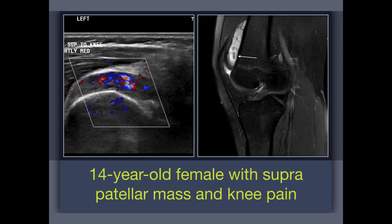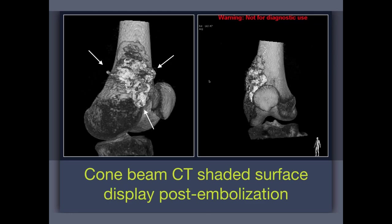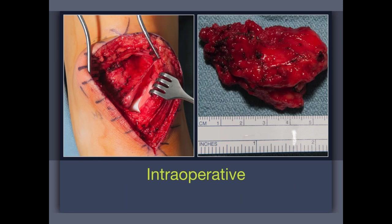Another case: a suprapatellar mass in a patient who was believed to have rheumatoid arthritis for a couple of years and received steroid injections into the knee with no benefit. Finally, she got an MRI showing the suprapatellar venous malformation with phleboliths. We embolized with glue — looking at the DSA you can see the drainage, so you have to make sure you don't get glue into the drainage. We usually make a cone beam CT with shaded surface display to help our surgeons plan the resection. Here are some intraoperative specimens — the glue-filled mass comes out as a block, as a unit.